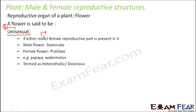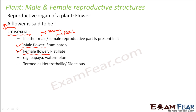As a recap: the male reproductive part of a flower is the stamen, and the female reproductive part is the pistil or carpel. If only the stamen is present, it is a male flower called staminate. If only the pistil is present, it is a female flower called pistillate. Examples of unisexual flowers are papaya and watermelon.